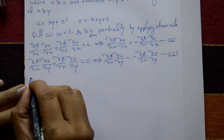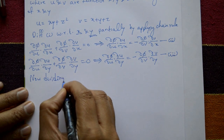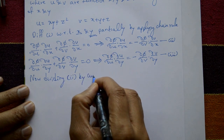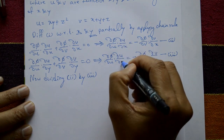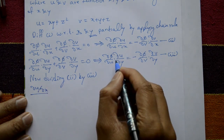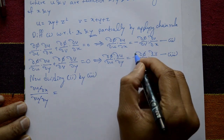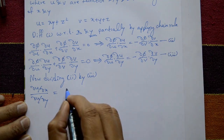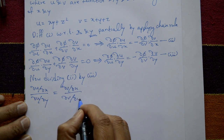Now, dividing equation number two by equation number three: ∂φ/∂u cancels, and ∂φ/∂v cancels, leaving (∂u/∂x)/(∂u/∂y) = (∂v/∂x)/(∂v/∂y).